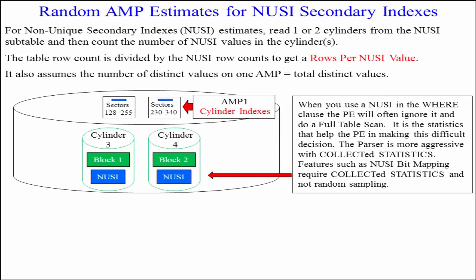How does it do a random amp estimate for NUSI — non-unique secondary indexes? For NUSI estimates, read one or two cylinders from the NUSI subtable and then count the number of NUSI values in the cylinder. The table row count is divided by the NUSI row counts to get rows per NUSI value. It also assumes the number of distinct values on one amp equals the total distinct values.